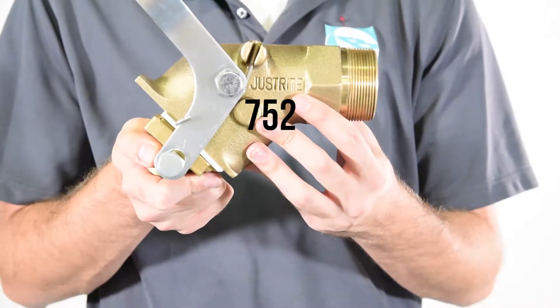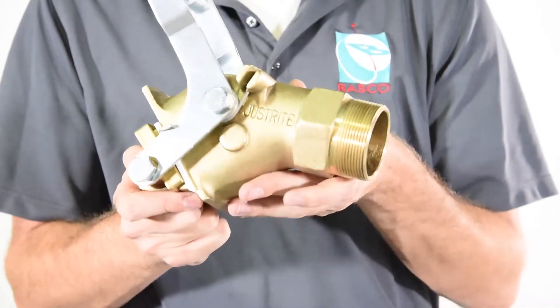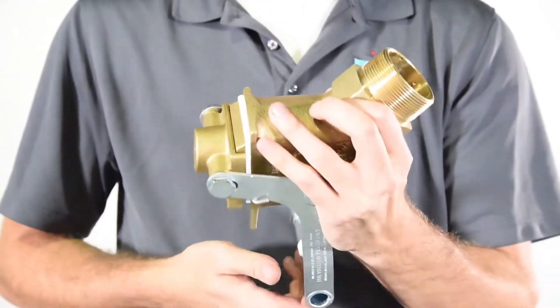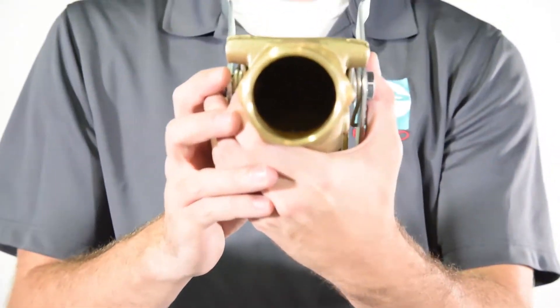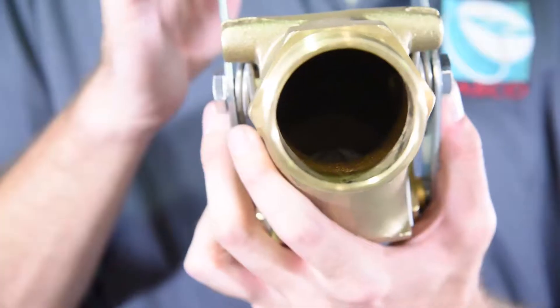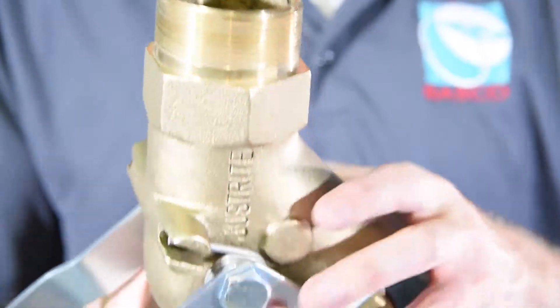This two inch brass gate valve has a spring-loaded PTFE gate blade for a fast clean cut off. It fits containers with a two inch NPT and has a PTFE o-ring to prevent leakage.